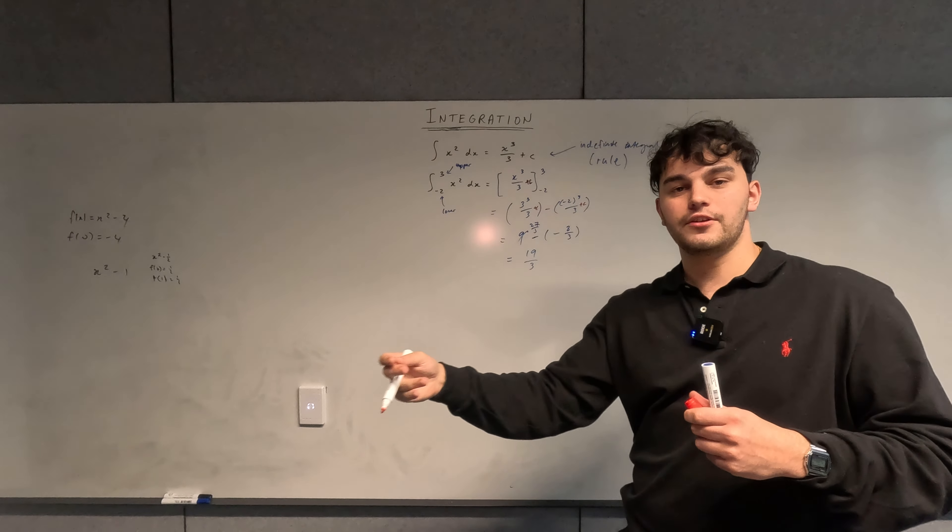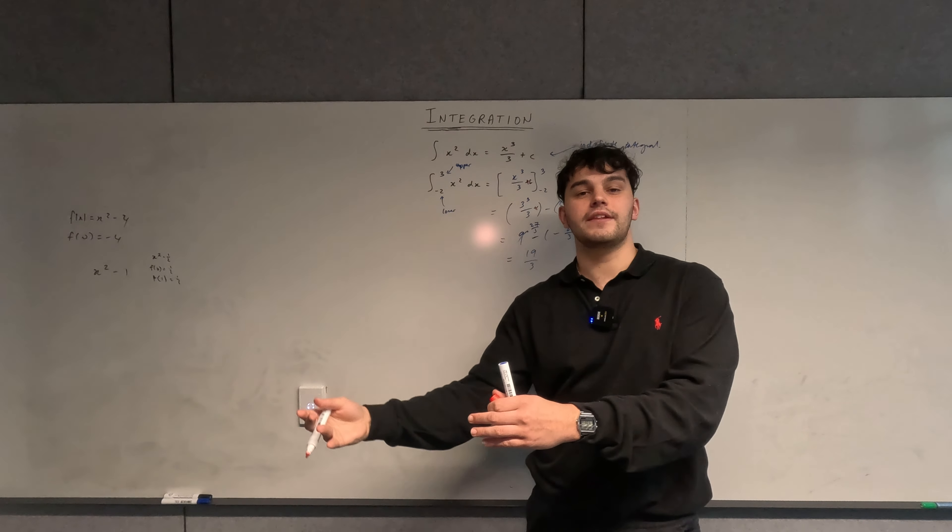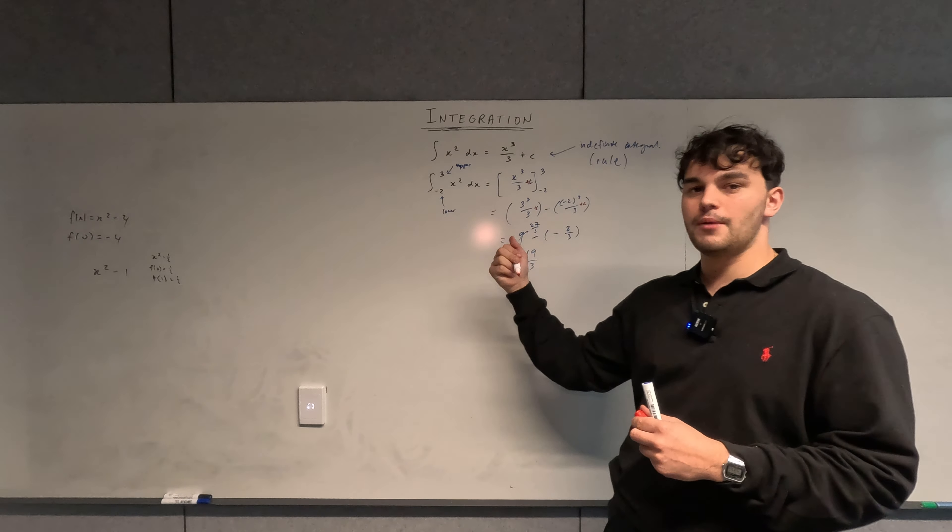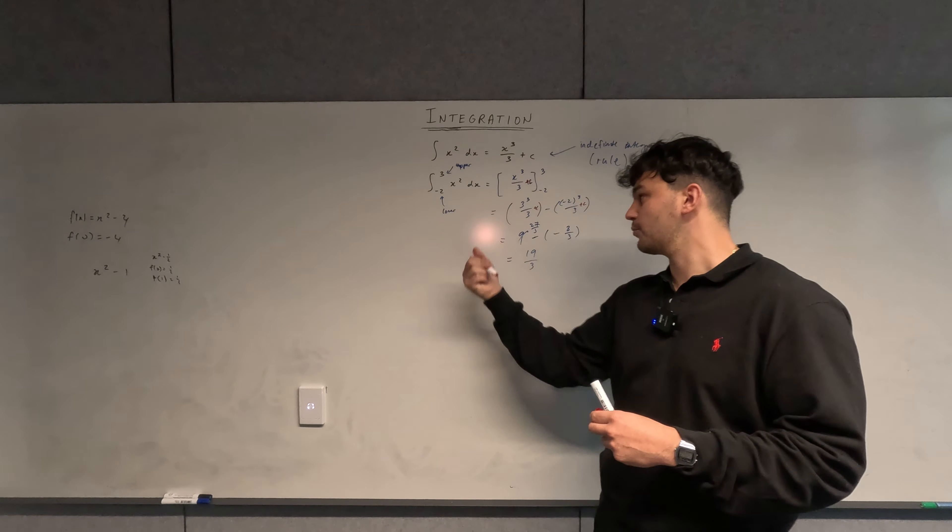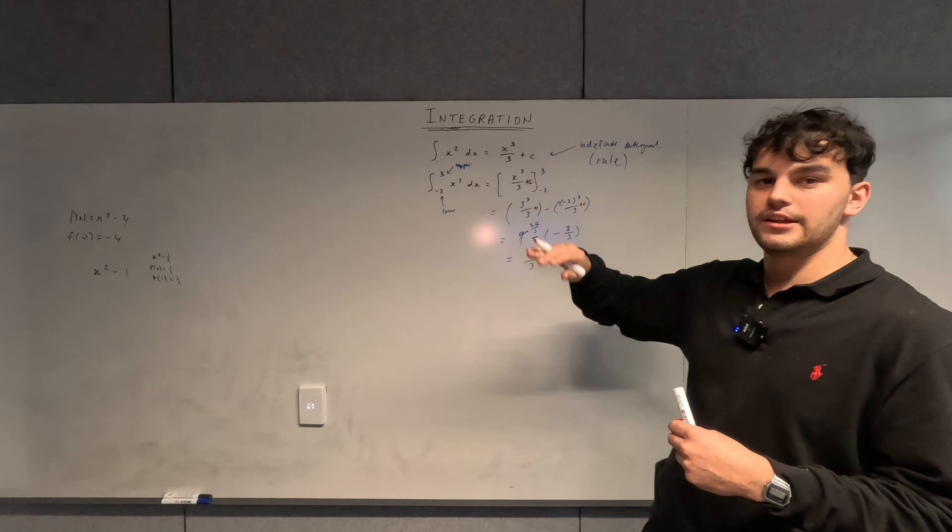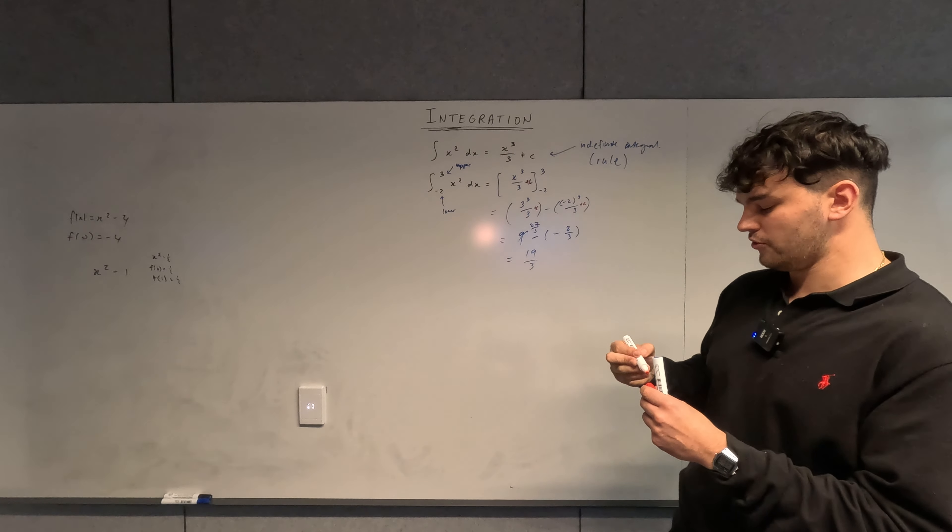And even if you actually knew the c value—remember how I said that you can find the c value sometimes if you're given a coordinate or an extra piece of information—even if you had one, for example if it was three, if it was negative five, if it was 100, it wouldn't make a difference to our calculation anyway. So you just ignore it whenever you're doing definite integrals.